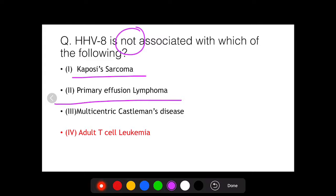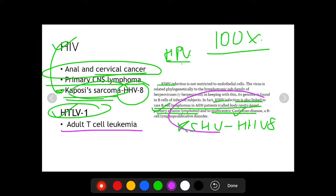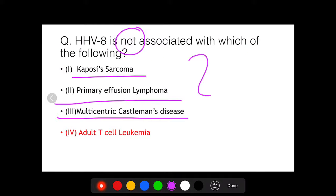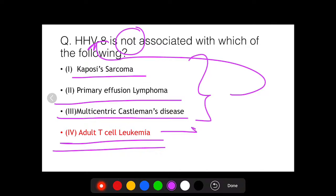Kaposi's sarcoma, primary effusion lymphoma, multicentric Castleman disease - as you can see, it is associated with all these three conditions. These three conditions are associated with human herpes virus, while adult T cell leukemia is caused by HTLV-1, and this becomes the answer to the question.